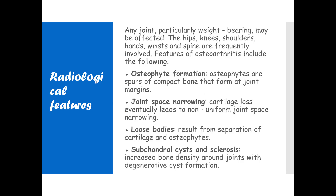Any joint can be affected, but particularly weight-bearing joints such as the hips, knees, shoulders, hands, wrist, and spine are frequently involved. Features of osteoarthritis include osteophyte formation — spurs of compact bone that form at joint margins — and joint space narrowing, which is due to cartilage loss and eventually leads to non-uniform joint space narrowing.